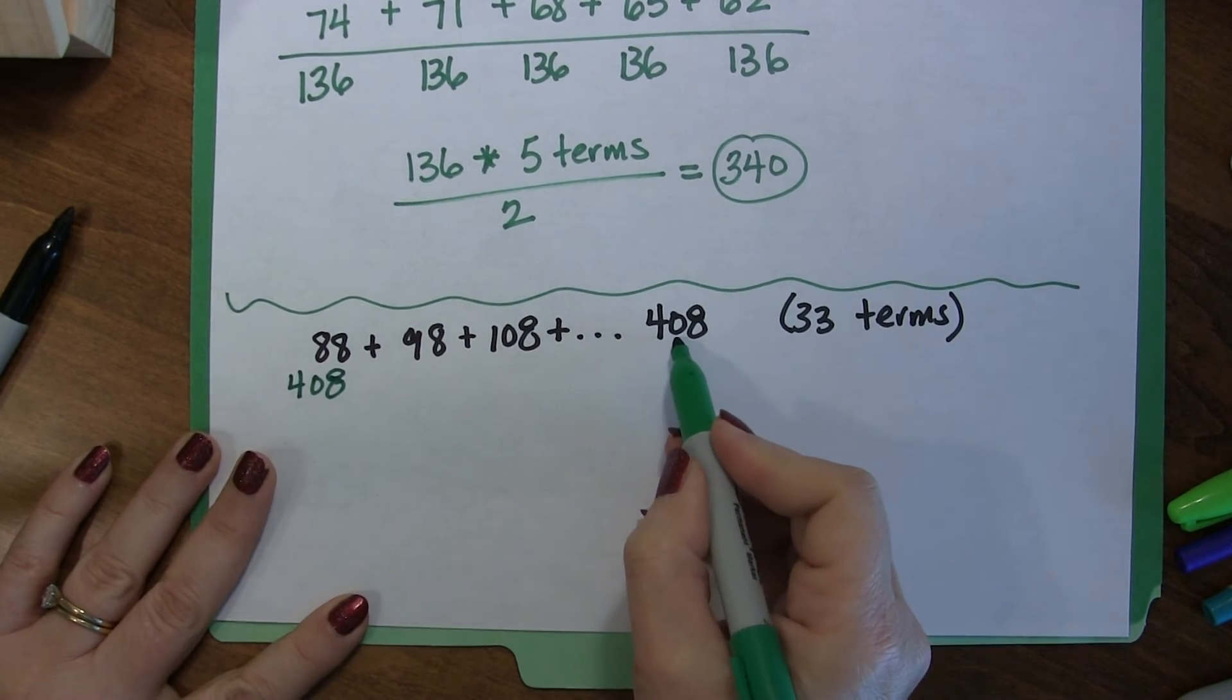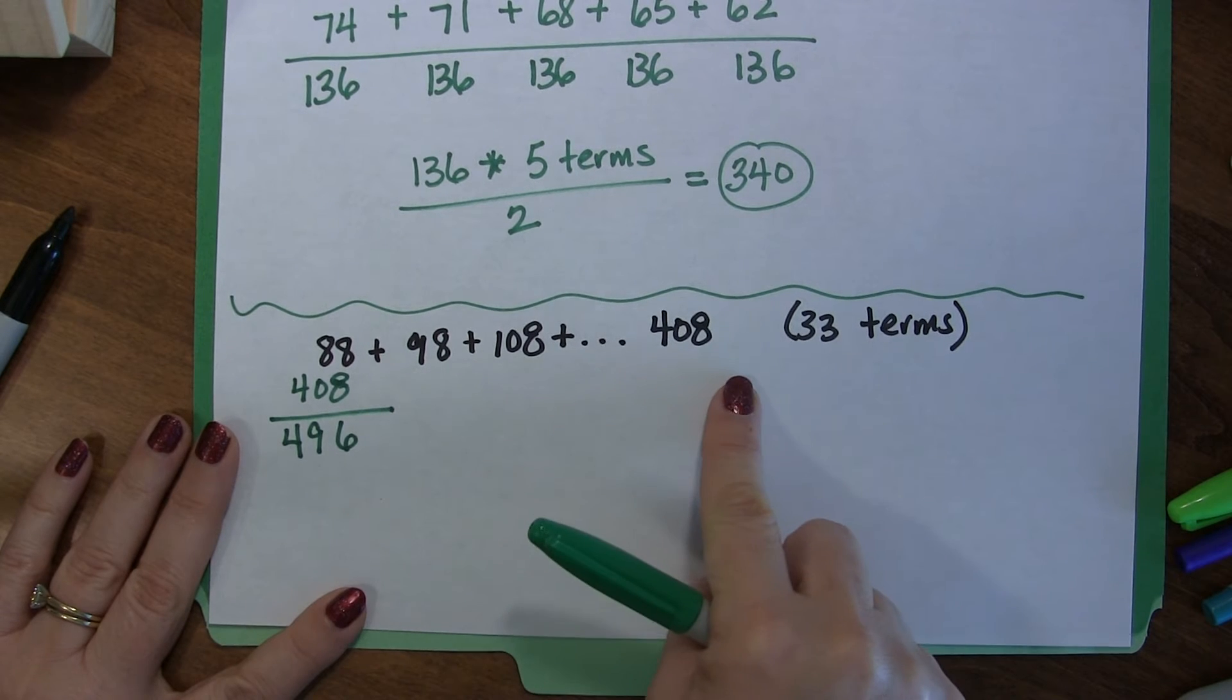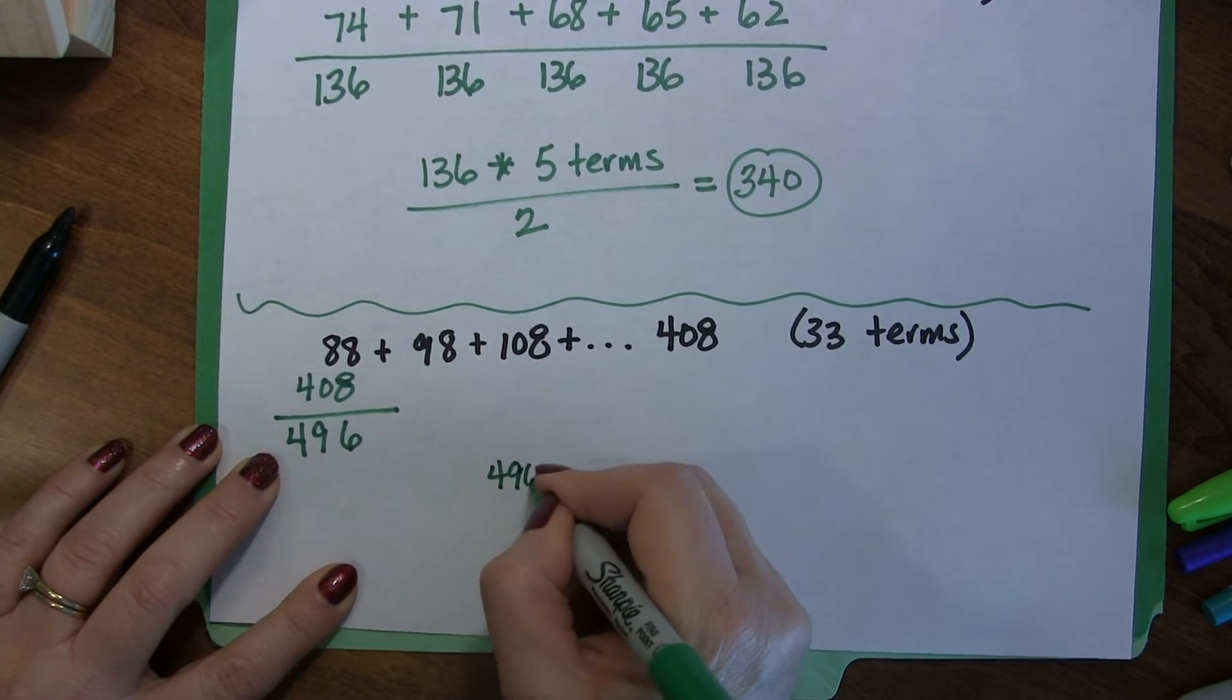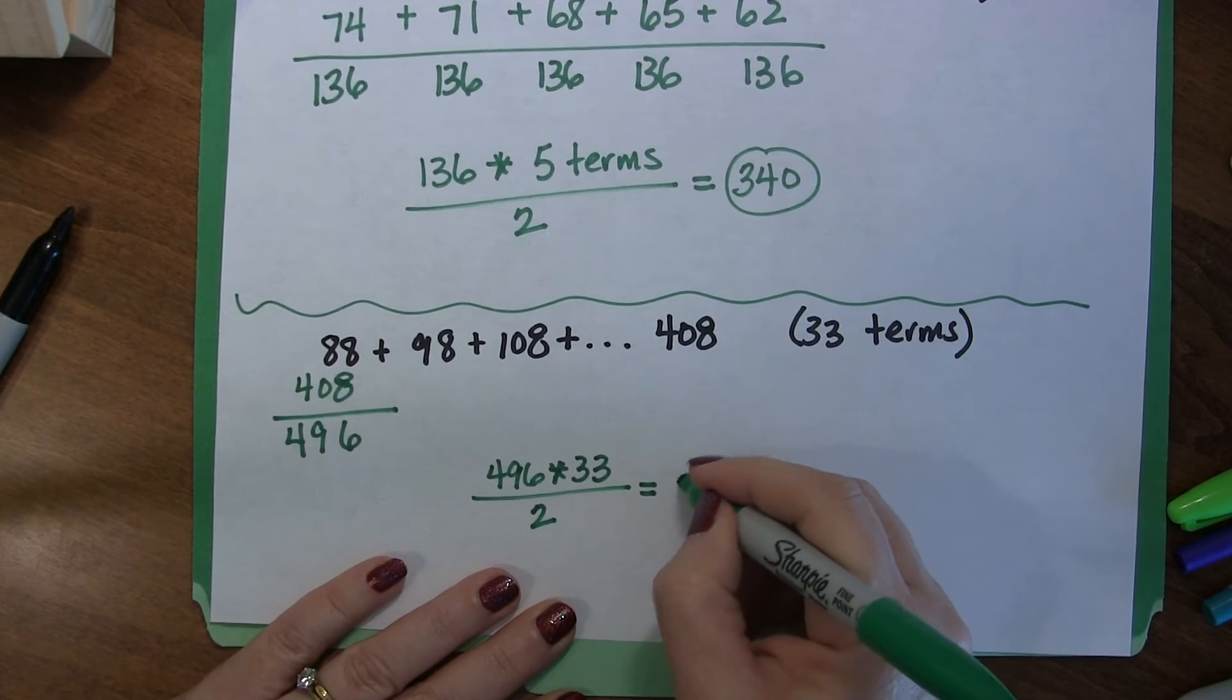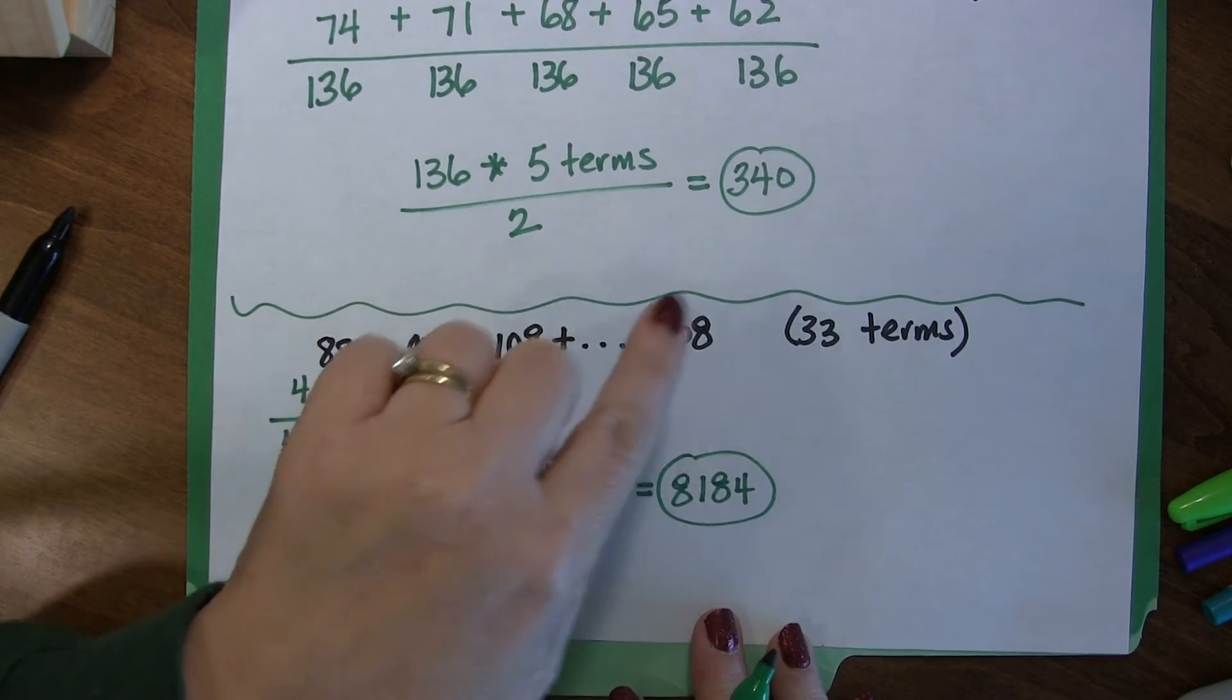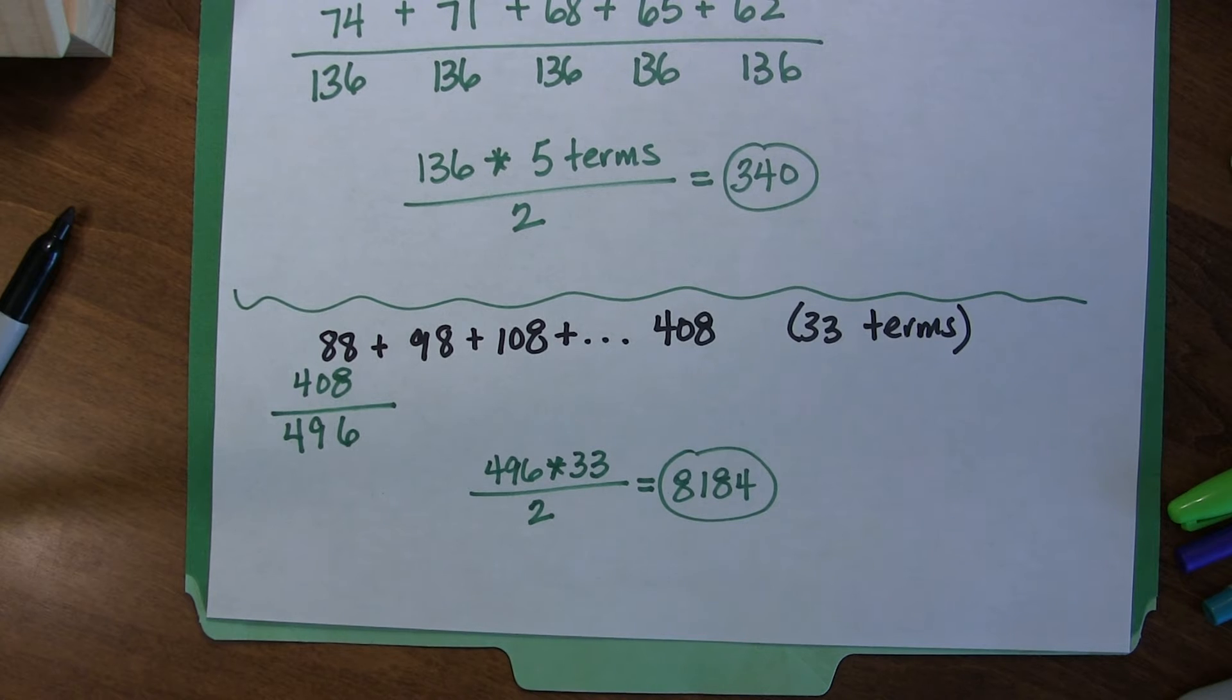I'm going to add 408, which is my last term, I'm going to add it to my first term. And that is going to give me 496. Now I could figure this out for every single term in the series, but I'm not going to because I know that they all turn out to be 496, because that's the beauty of this system. So, I take 496, I multiply it by the number of terms, which is 33, and I divide it all by 2, and I get 8184. So if I add it up, or you add it up, 88 plus 98 plus 108 plus 118 plus 128 plus 138 plus 148 plus 158, and I kept going up until 408, when I added all those numbers together, I would get 8184.